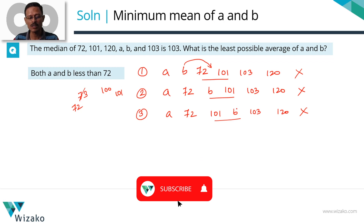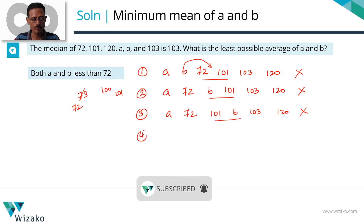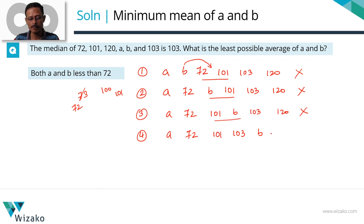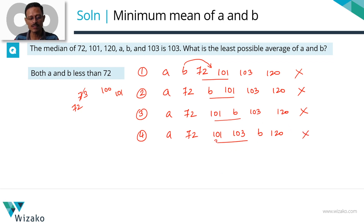Iteration 4: keep a to the left of 72, push b further right — between 103 and 120. The ascending order: a, 72, 101, 103, b, 120. The middle two numbers are 101 and 103; median is 102, not 103. Pushing b any further right, the third and fourth numbers still remain 101 and 103, so the median stays at 102.